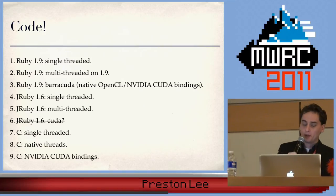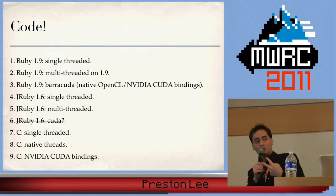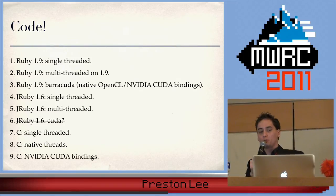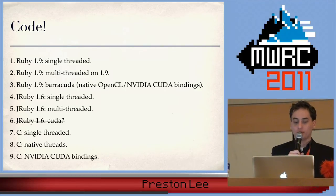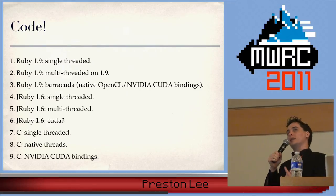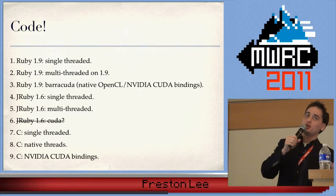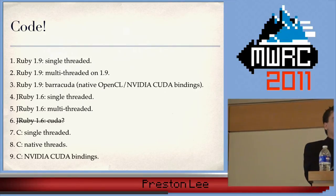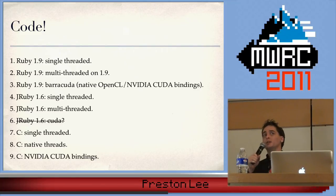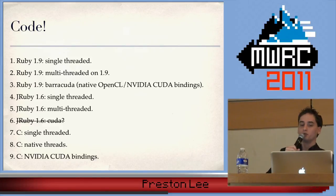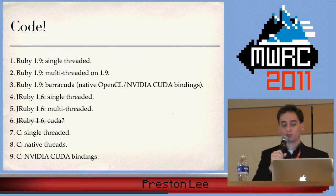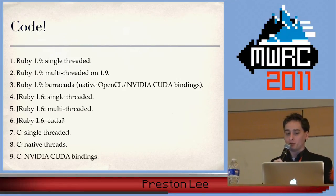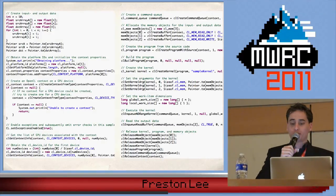We've got nine cases and we've already been through four of them: cases one and two are Ruby 1.9 single-threaded and multi-threaded — and oddly, single-threaded is faster. We did JRuby single-threaded and multi-threaded as cases four and five. We haven't done an OpenCL implementation yet. Can we do JRuby with OpenCL? The answer right now is no, because under JRuby you can't use a lot of native extensions. With JRuby you could load a Java library to connect to OpenCL directly, but if you're trying to load a Ruby library to do it, it's probably not going to work.